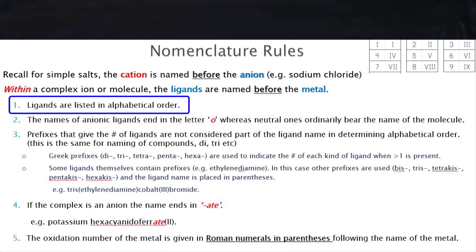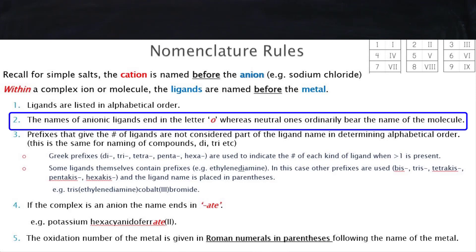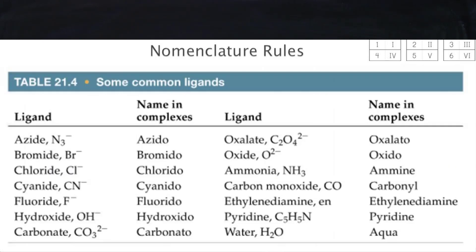When you're listing the names of the ligands, we put them in alphabetical order. For the ligand name itself, if it's an anionic ligand it ends in the letter O, whereas if it's a neutral ligand it bears the name of the original molecule, as shown in this table here.